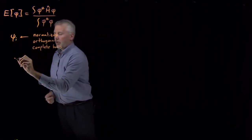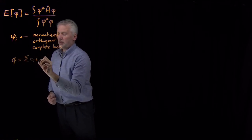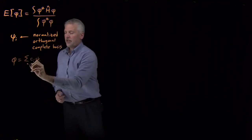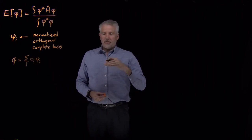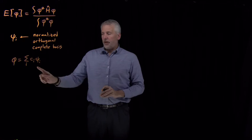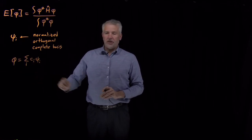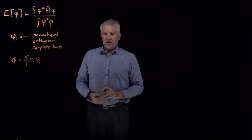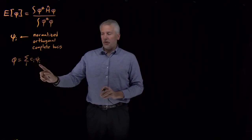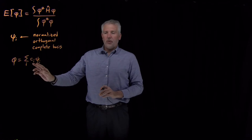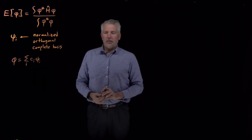Meaning specifically that any function can be written as a linear combination of these wave functions. So in particular, whatever my trial function is, there's a way to write it down as a sum of the ground state, first excited state, second excited state. If we find the right coefficients, we could write any function we like as a linear combination of these correct wave functions. Again, that may be hypothetical, because if we don't know what the wave functions are, we don't know how to construct this trial function out of it, but it's at least possible in principle.